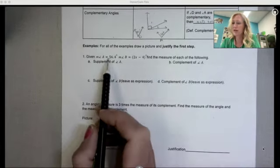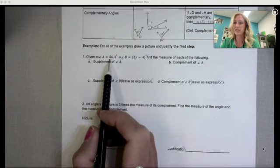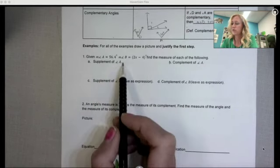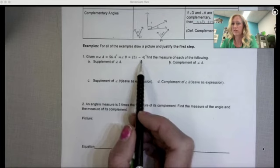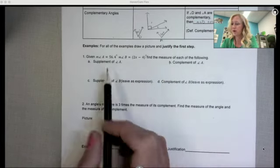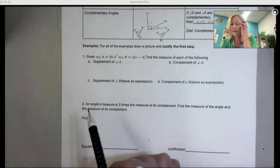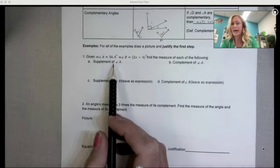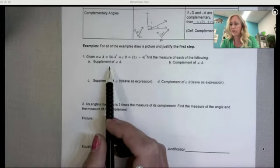Okay, so we're given that angle A, the measure of angle A is 56.4 degrees and angle B is 2x minus 4 degrees. Find the measure of each of the following. Okay, so they want me to find the supplement of A.